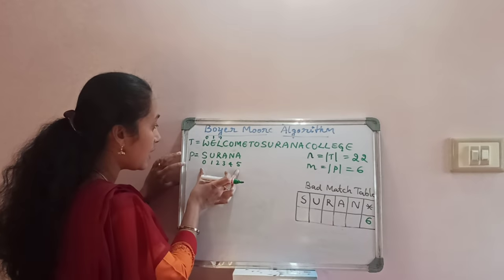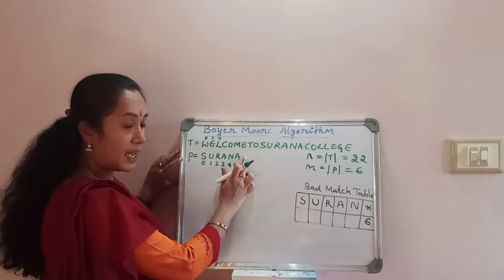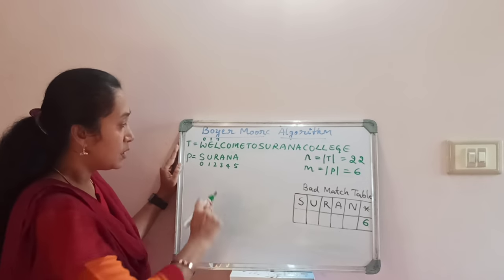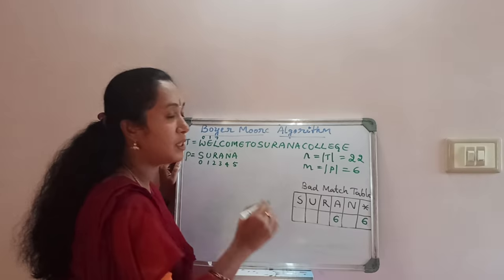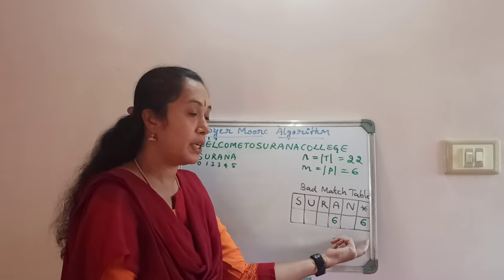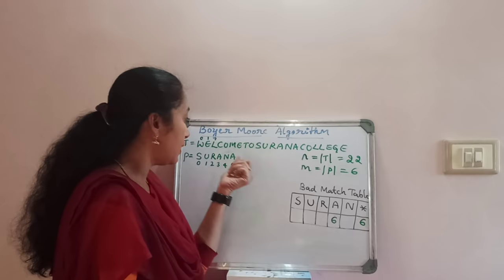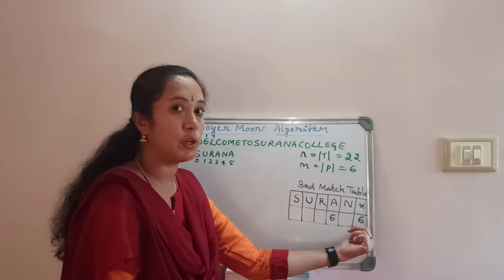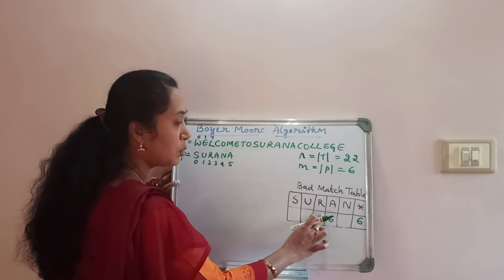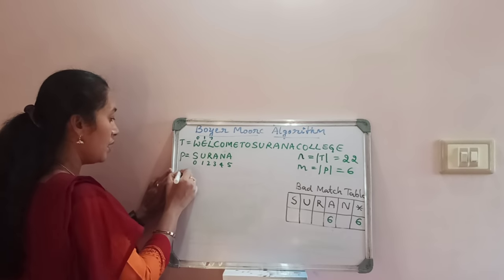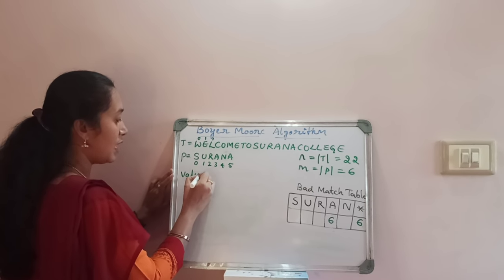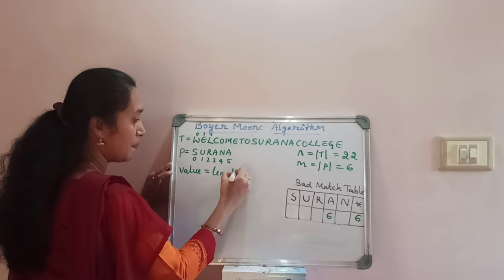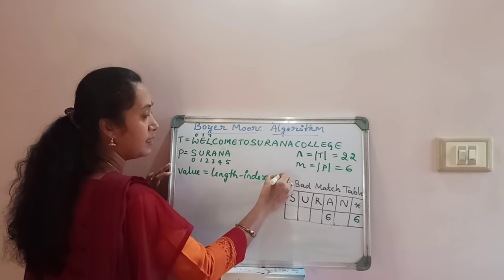Along with that, the value of the last character in the pattern is also equal to the length of the pattern. In this example, the last character is A, so A's value is also 6. So these are the two main things to consider: the last character from the pattern and the star value are both equal to the length of the pattern. Now let us go through calculating the remaining values. When we are calculating these values, we follow the formula: value equals length minus index minus 1.